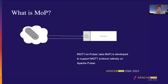What is MOP? MOP, the full name is MQTT Protocol Handler on Pulsar. It is an Apache Pulsar protocol handler that helps Pulsar have the ability to support MQTT protocol natively. The MQTT client can use it to communicate with the Pulsar broker directly.